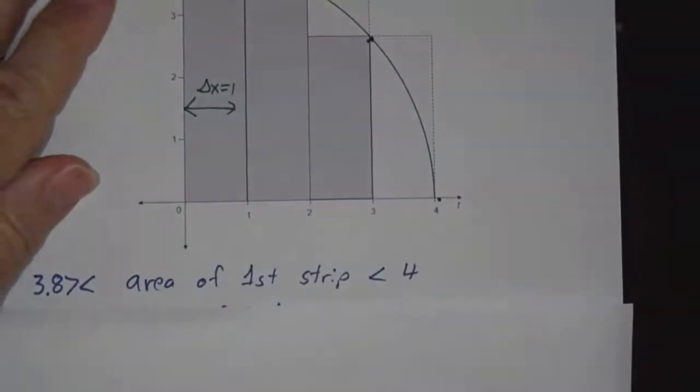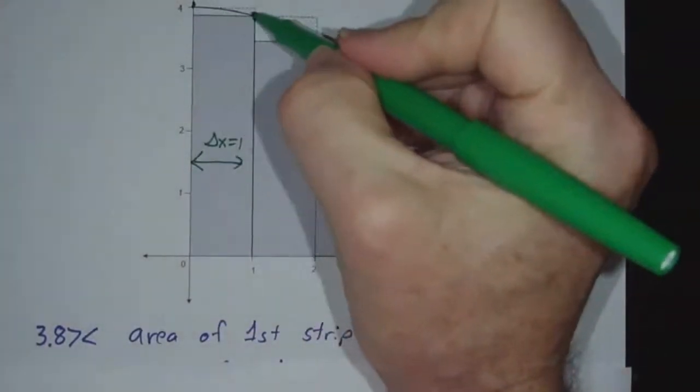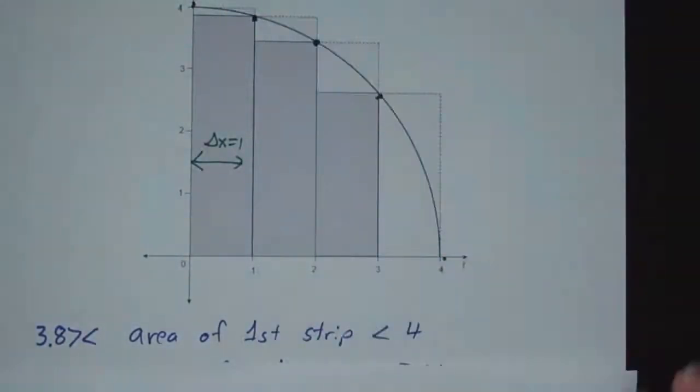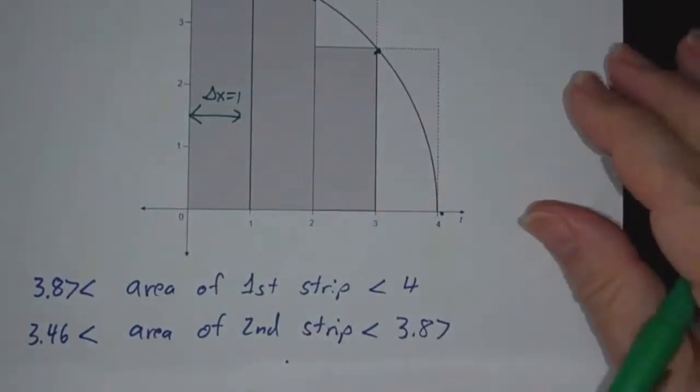So the area of the first strip is somewhere between 3.87, that's the value up here, and 4. The area of the second strip is somewhere between 3.46 and 3.87.